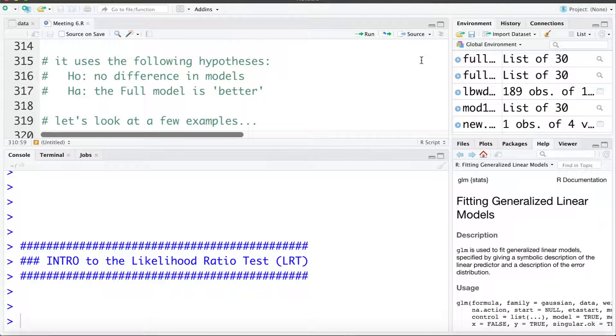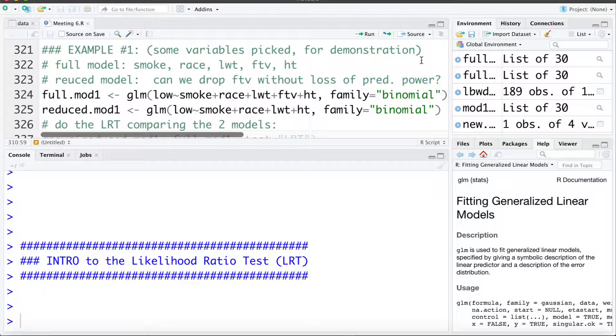Let's take a look at a few examples of using this test. The first I'll call example 1, and here I've just picked some variables to include in a model for demonstration. We're going to start with a full model that has smoking, race, LWT, FTV, and HT to try and estimate the probability of a baby being born low birth weight.